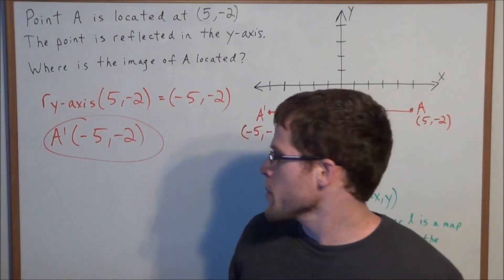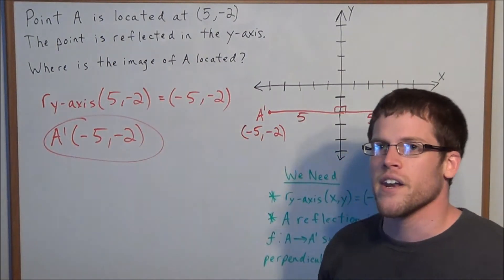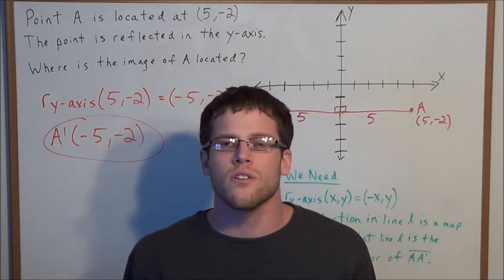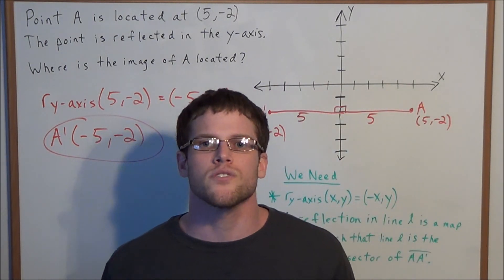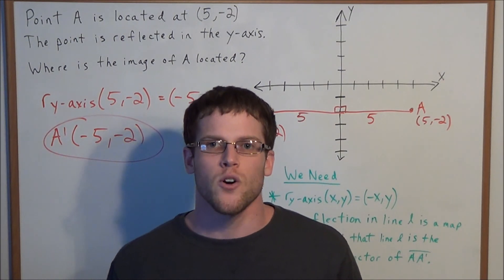So our answer, where is the image of A located? We have A prime is located at negative 5, negative 2. Okay, well this is going to conclude this reflection problem, as well as this video. Thank you all for watching, and I hope that it was helpful.